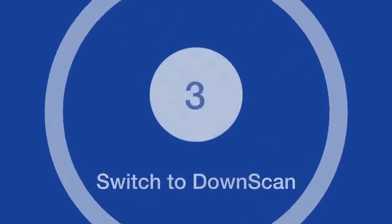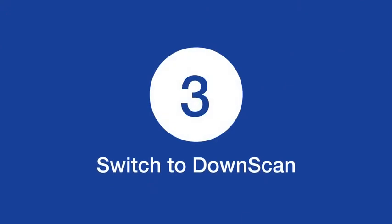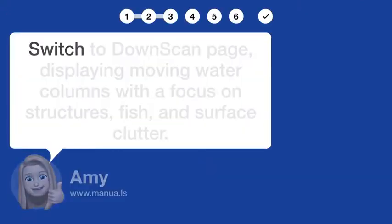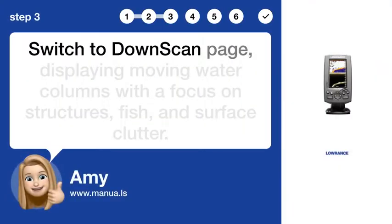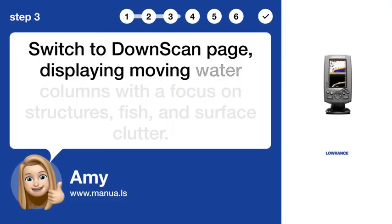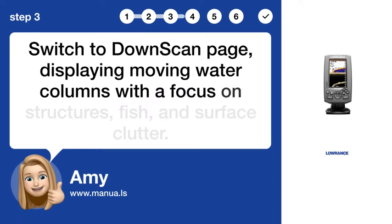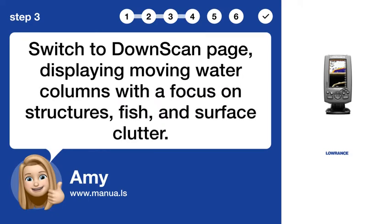Step 3: Switch to downscan. Switch to the downscan page, displaying moving water columns with a focus on structures, fish, and surface clutter.